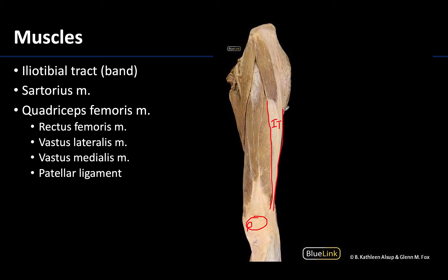The gluteus maximus, which is posterior, has a dominant distal attachment to the IT band, as does the tensor fascia latae, or TFL - the muscle located superior and laterally here. Now let's turn our attention to the more anterior muscles, starting with the longest muscle of the body. I'm going to outline it here, and this is the sartorius muscle.